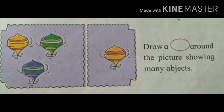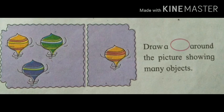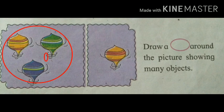Now, in the last picture you can see a top. There are three tops in the first picture and in the second picture there is only one top. Draw a circle around the picture showing many objects. So tell me, students, in which picture are there many tops? Very good — in the first picture there are three tops. Let's circle the three tops. While doing the circle, we are showing that these are the many objects. Students, have you done? Very good.